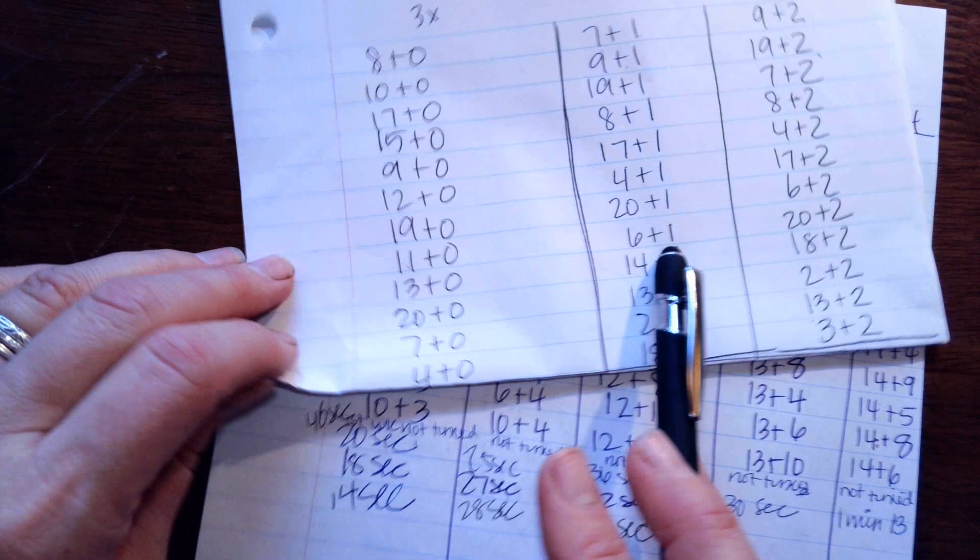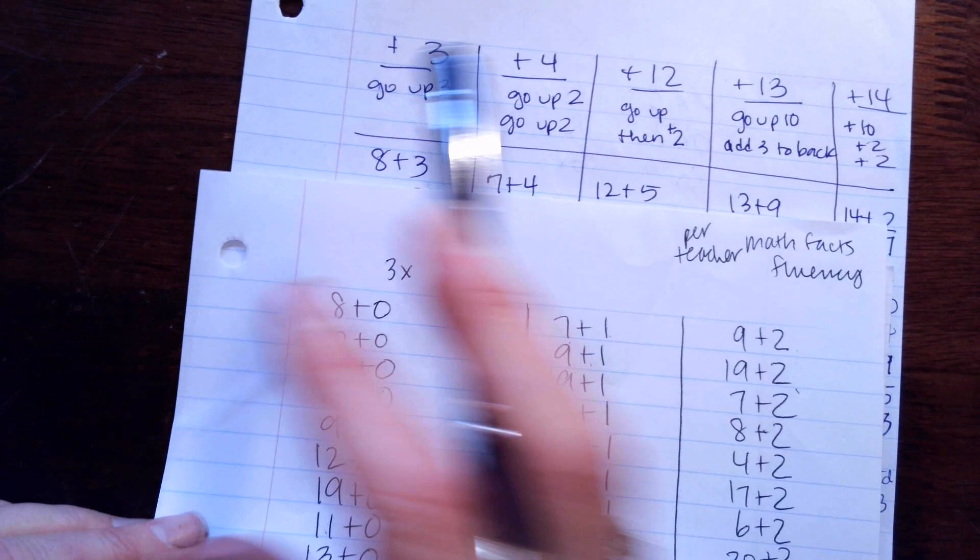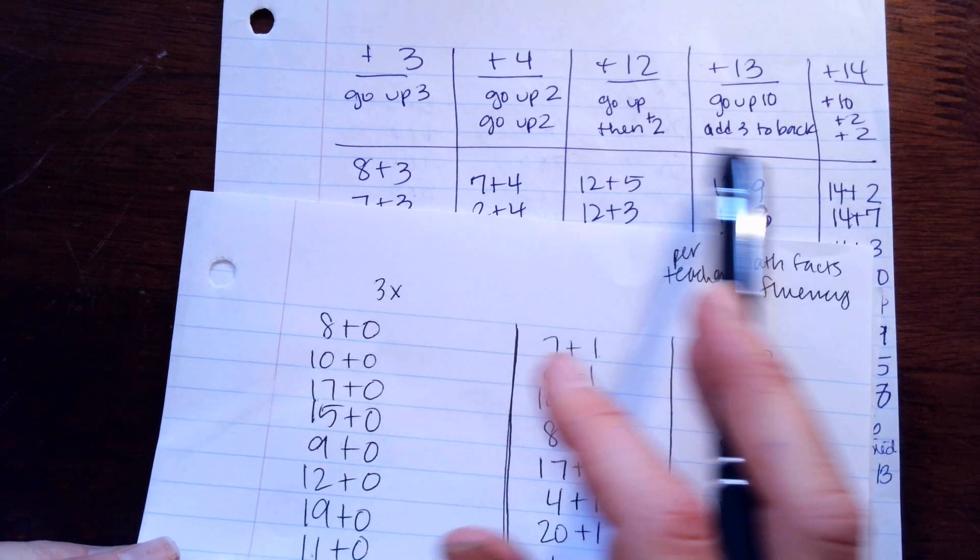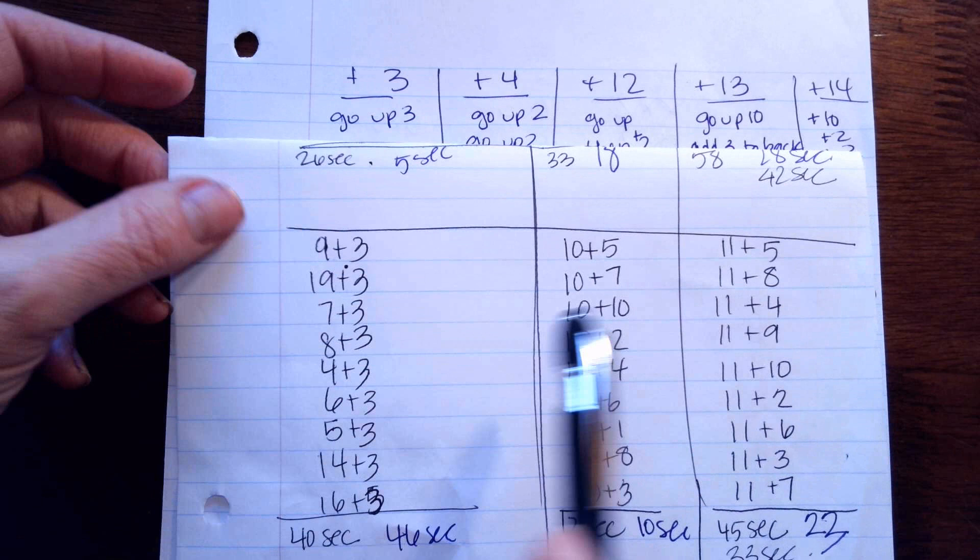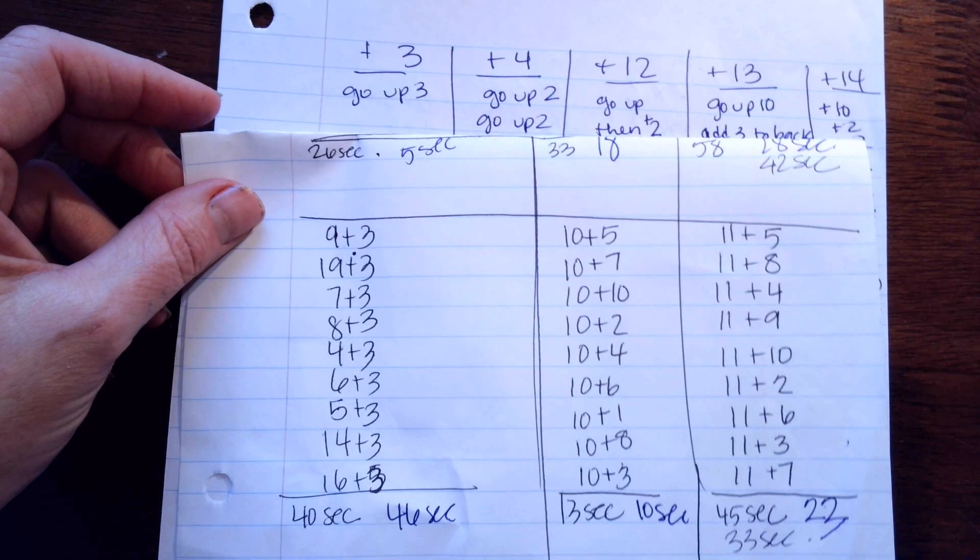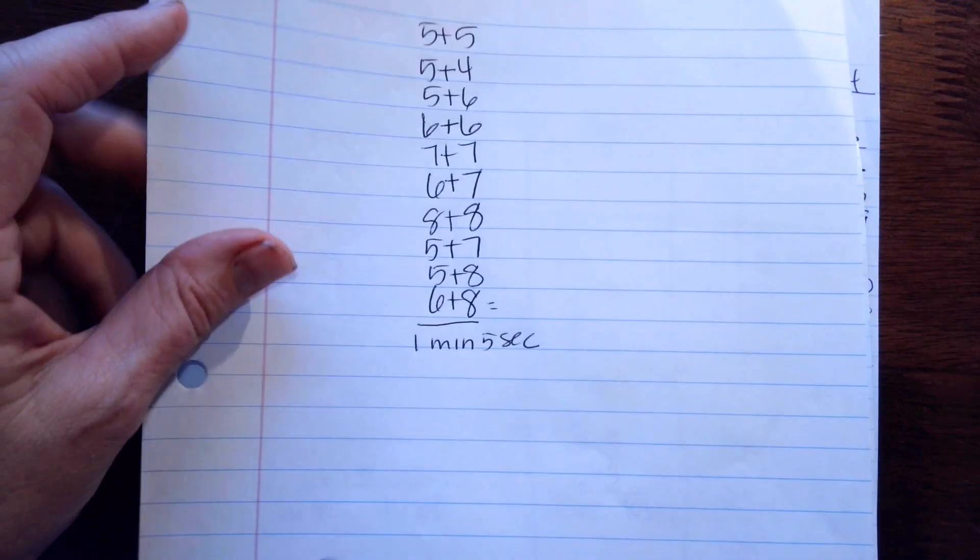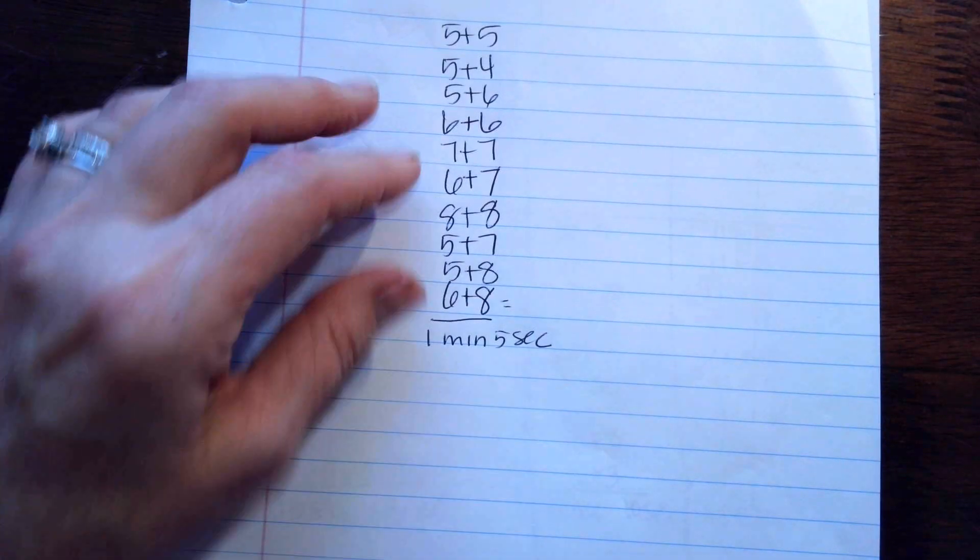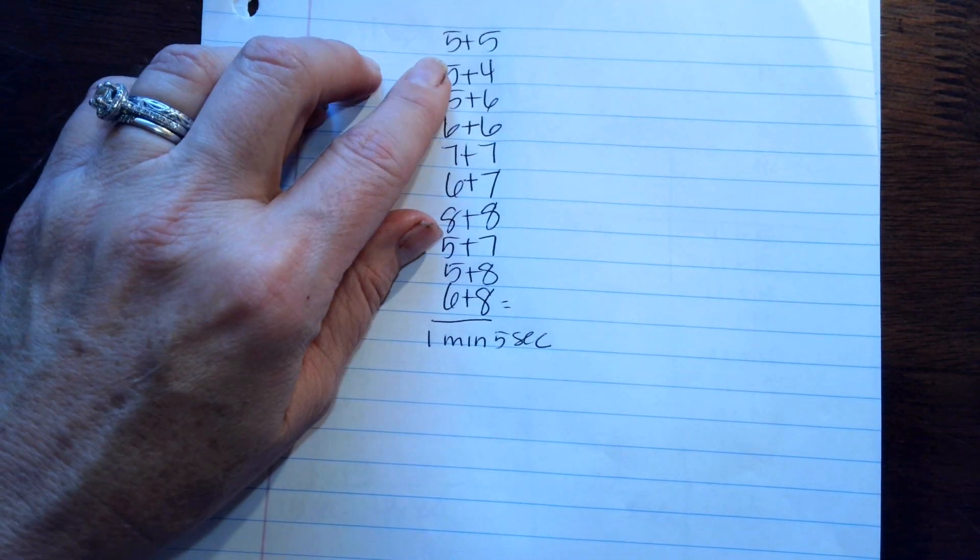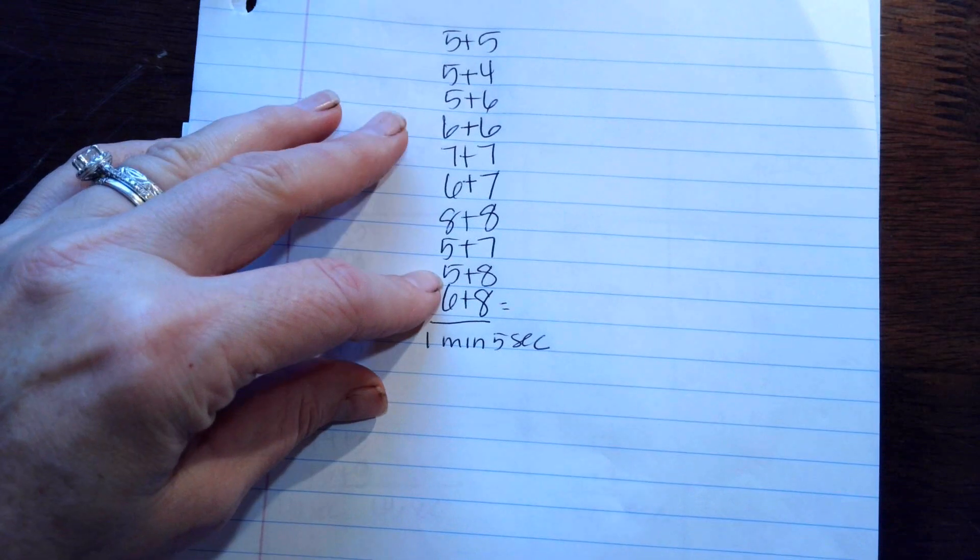So plus 1, plus 2, plus 3, plus 4, plus 12, 13, 14, plus 10, 11, and then this one. So you're going to do all of them a total of five times, and then this last one you're going to do a total of seven times.